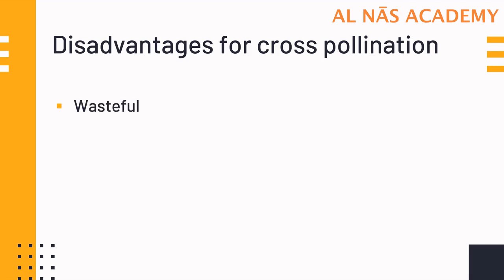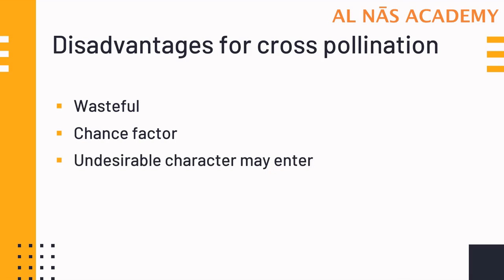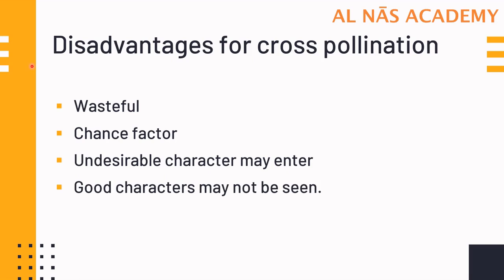The disadvantages of cross-pollination: it is highly wasteful because plants must produce larger numbers of pollen grains and other accessory structures to suit various pollinating agents. It is a chance factor — chance is always involved in cross-pollination. It is less economical, and some undesirable characters may creep into the race. For example, if the egg is very healthy but the pollen is defective, the progeny may be defective. Good characters may not be seen and undesirable characters may enter.